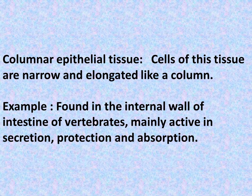Columnar epithelial tissue: Cells of this tissue are narrow and elongated like a column. Example: found in the internal wall of the intestine of vertebrates, mainly active in secretion, protection, and absorption.